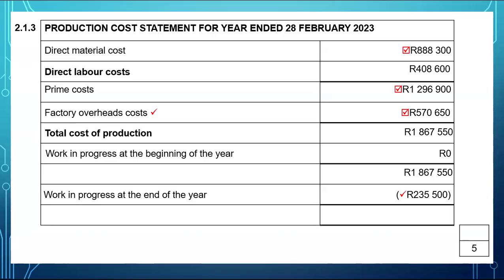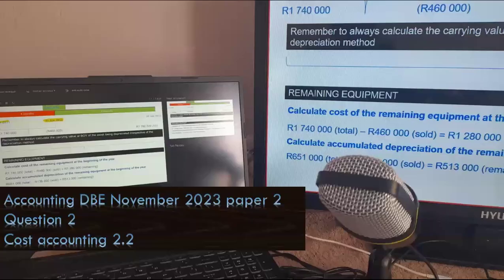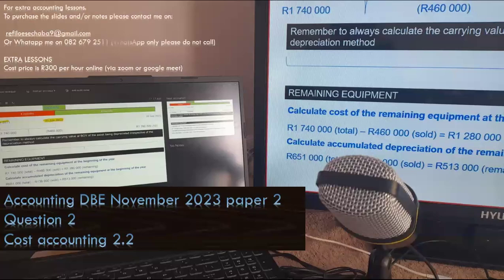By taking $1,867,550 and minusing the work in progress — which is the cost of unfinished goods — we will be left with the cost of production of finished goods, which will amount to $1,634,050. And that is it. Please check out the next video for 2.1.4.